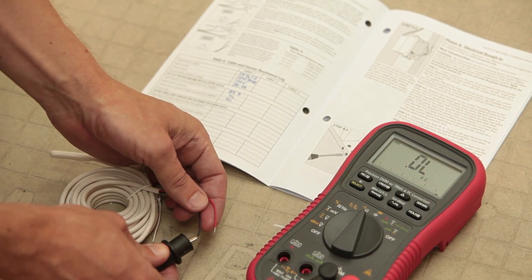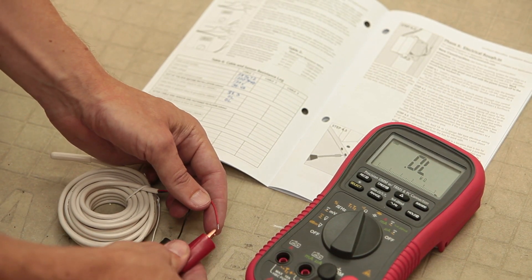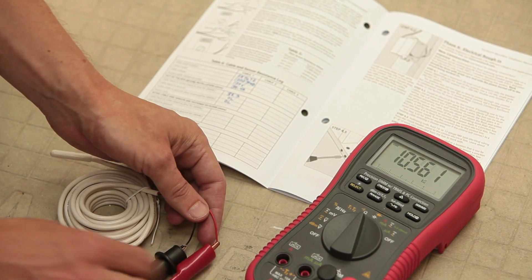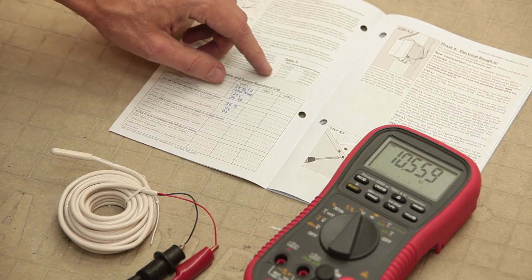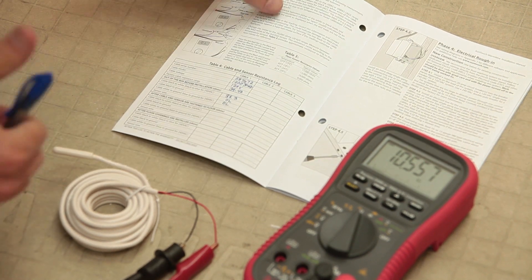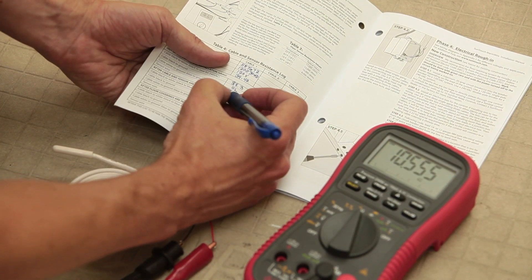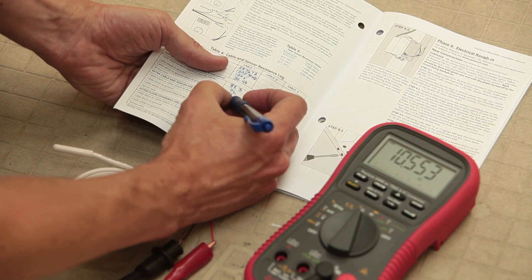Change the meter to the 20,000 ohm range to test the sensor wires. Place a test lead on each wire. Look up the resistance in the floor sensor resistance chart from the manual to see if the number is appropriate for the temperature in the space where you're testing.